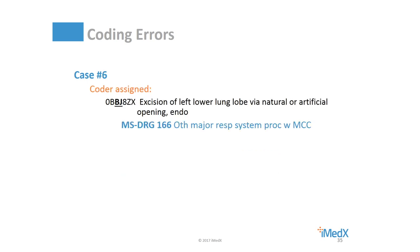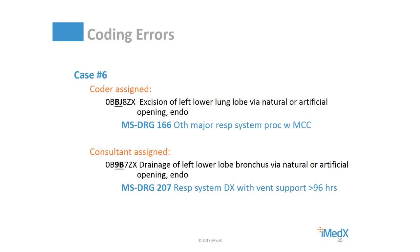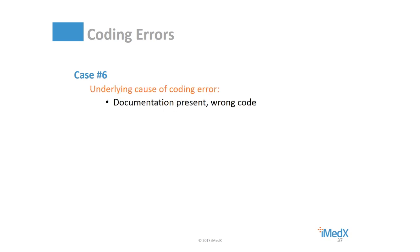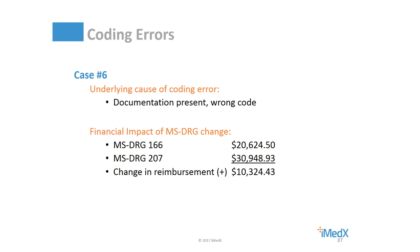This last case, number six, is an instance where the coder assigned a code for excision of left lower lung lobe. On review of the operative note, the consultant changed the root operation for the procedure code to drainage of the left lower lobe bronchus, resulting in an MS-DRG change from 166 to 207. The rationale: the operative report clearly documented a bronchoscopy with bronchoalveolar lavage, which equates to the root operation drainage of the body part bronchus rather than excision of a lobe of the lung. The underlying cause equates to documentation being present, but the coder selected the wrong procedure code — a challenge likely resulting from equating a bronchoalveolar lavage to the appropriate root operation. The financial impact was significant, an increase of greater than $10,000 due to the change in the procedure that originally drove the MS-DRG assignment.